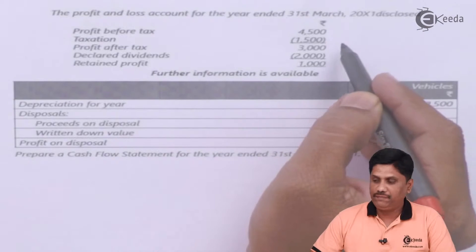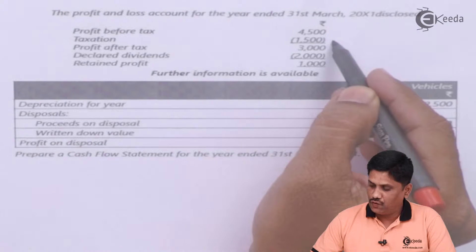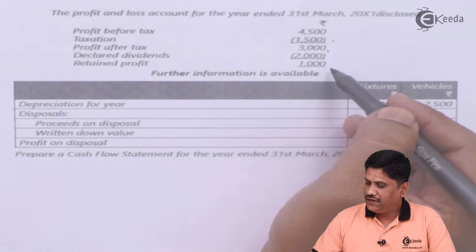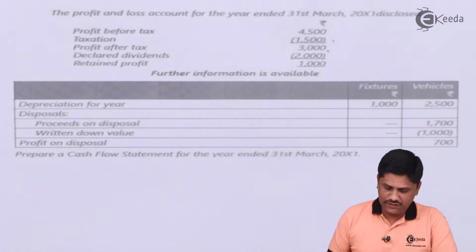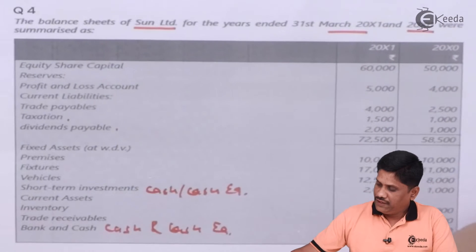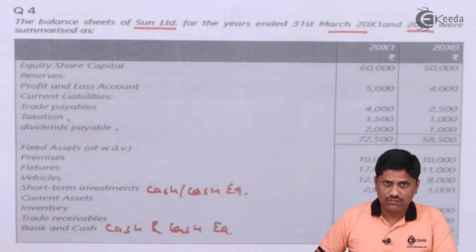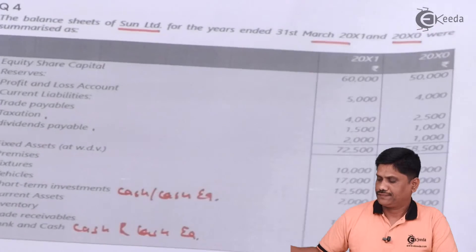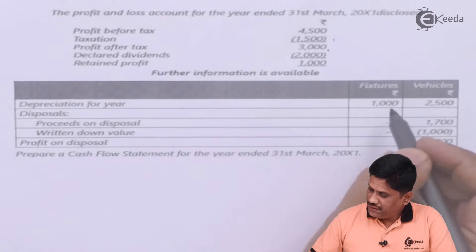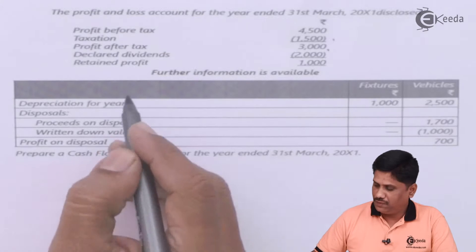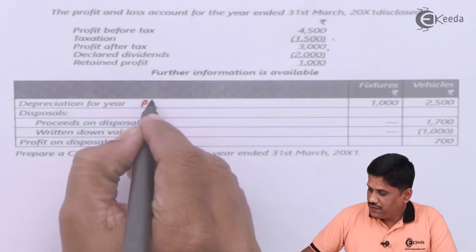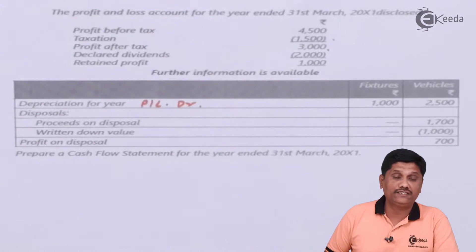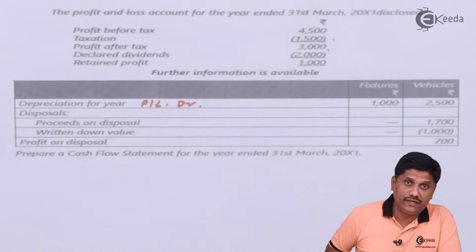The Profit and Loss account for the year ended 31st March 200X1 discloses: profit before tax, taxation provided, profit after tax, dividend declared, and retained profit of 1,000 which is added to the P&L account. Further information: depreciation for the year is debited to the P&L account. Since it is a non-cash expenditure, it will be added back to get the cash profit.